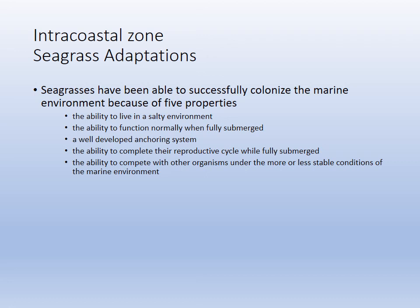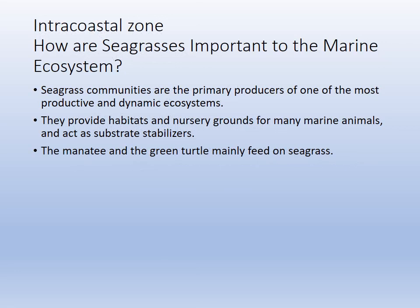Seagrasses are isotonic, meaning they do not need to get rid of ions. They live in a fully salty environment and function normally. They have a well-developed anchoring system and their reproductive cycle is fully intact when submerged. They are essentially the only oceanic submergent vegetation from Kingdom Plantae — we have emergent plants like mangroves and salt marshes, but seagrasses are the only submergent group. They're very important because they feed manatees and turtles, provide nesting habitat for fish and snails, trap sediments, and provide oxygen to the water.